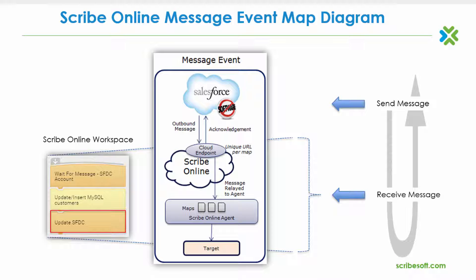When using Salesforce as the primary message-driven source application, configuration of both outbound message and workflow rules is required within Salesforce. This configuration, which is detailed within the Salesforce online help system, will send an XML message to a URL endpoint when the defined Salesforce workflow fires and the outbound message functionality directs the message to the ScribeOnline endpoint URL.